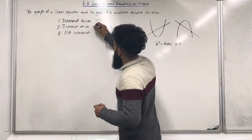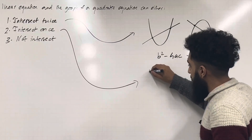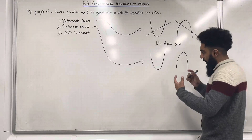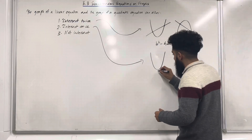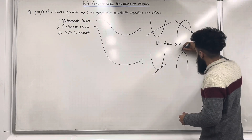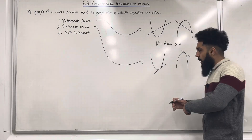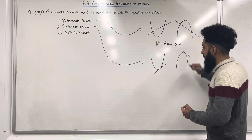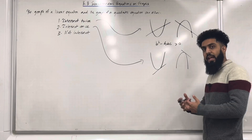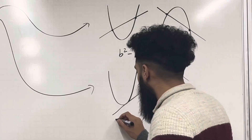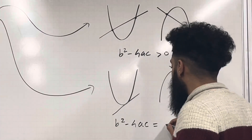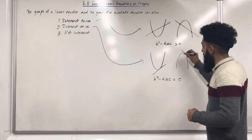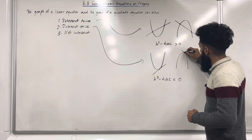Intersect once: you could have a positive quadratic or a negative quadratic, and the line intersects once. When the line is intersecting once, what we have is a tangent. If we calculate the discriminant, b squared minus 4ac, in this scenario it will equal 0. There's only one root.